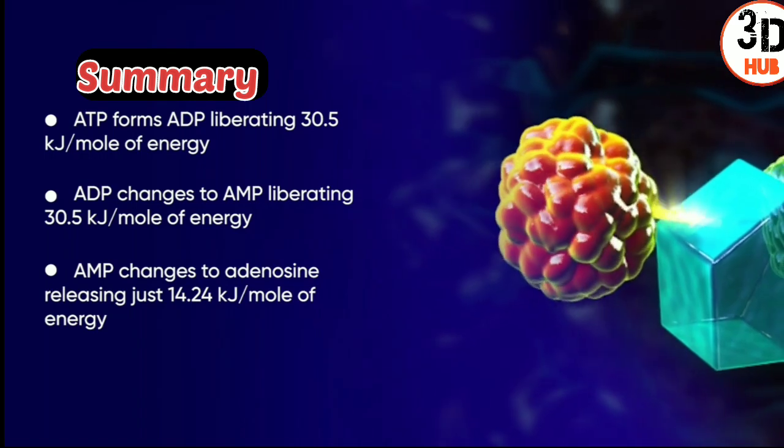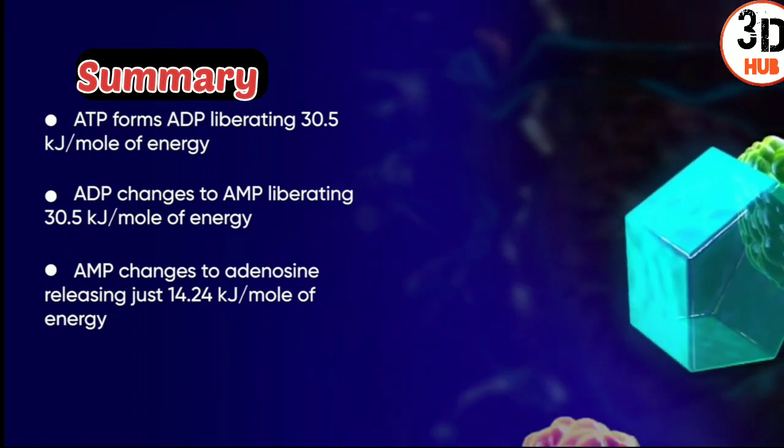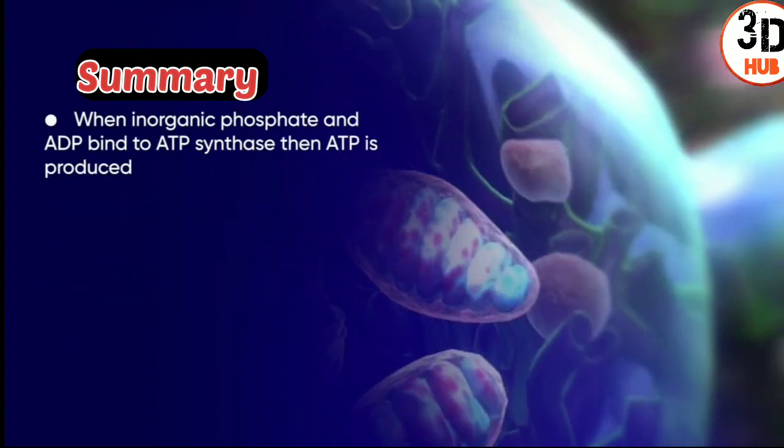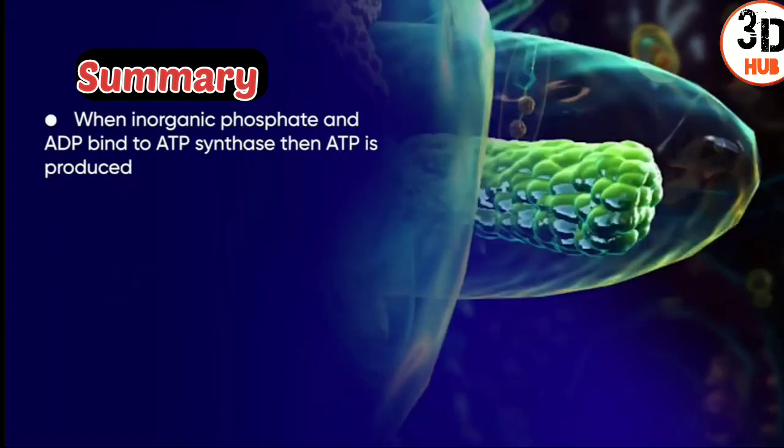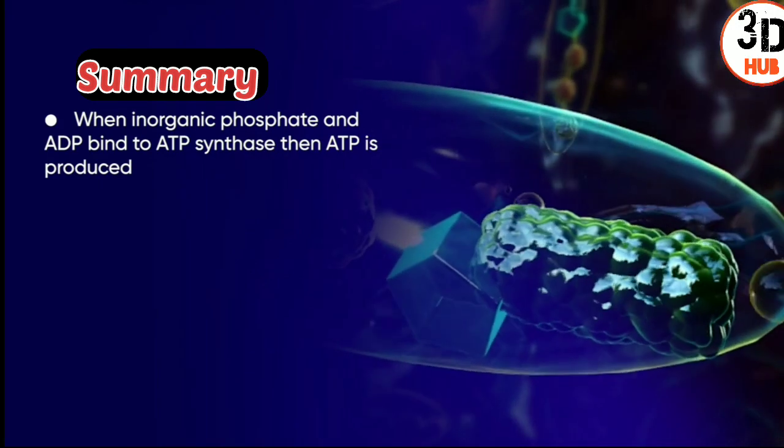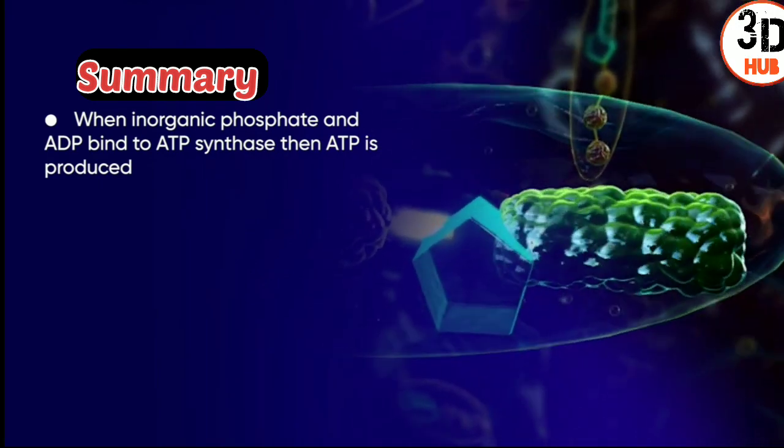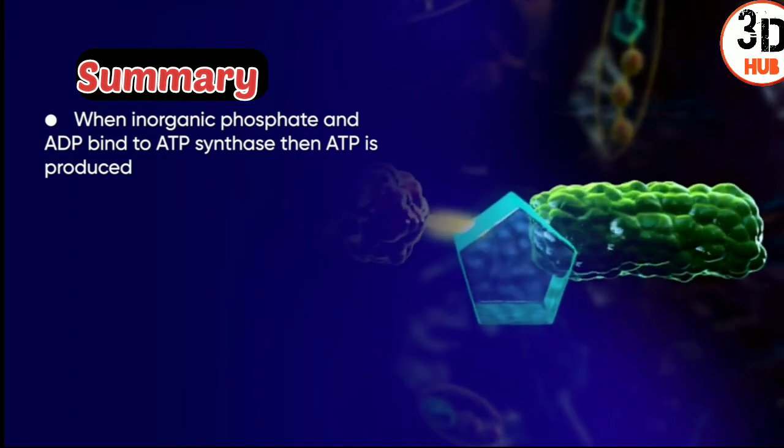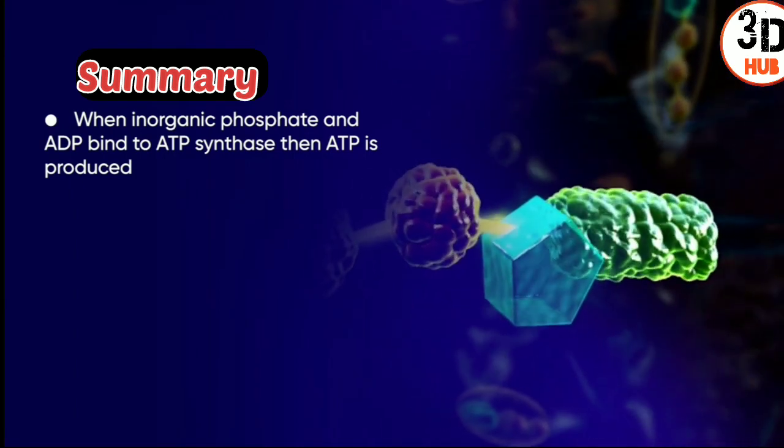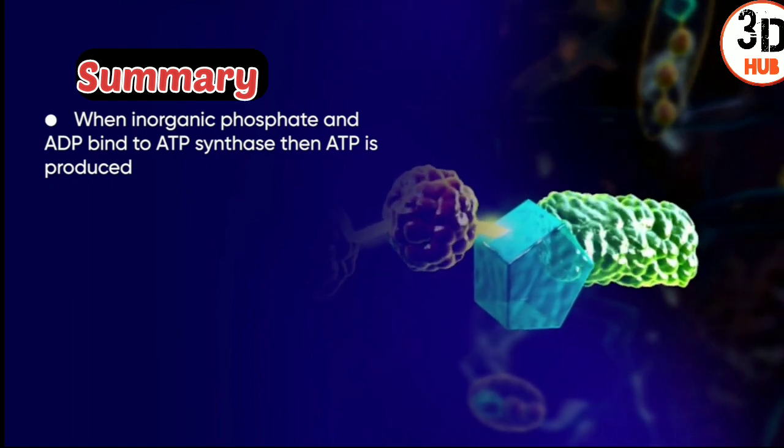ADP changes to adenosine, releasing just 14.24 kilojoules per mole of energy. When inorganic phosphate and ADP bind to ATP synthase, then ATP is produced. This ATP molecule is then released from it and enters the mitochondrial matrix and accumulates in it.